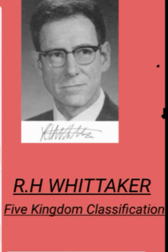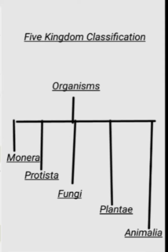A natural system of classification is one where many characteristics or parameters are taken into consideration to group different organisms. In Whittaker's five kingdom classification, he divided organisms into five groups. Four groups — Monera, Protista, Plantae, and Animalia — were already present before him, but he added Fungi as a separate kingdom.